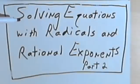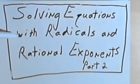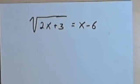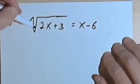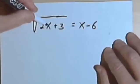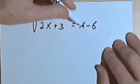This is going to be the second video about solving equations with radicals and rational exponents. I want to do one with a radical sign. Here I have the square root of 2x plus 3 equals x minus 6.